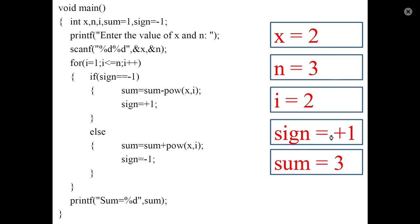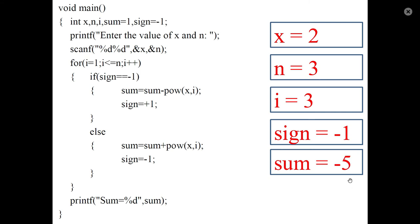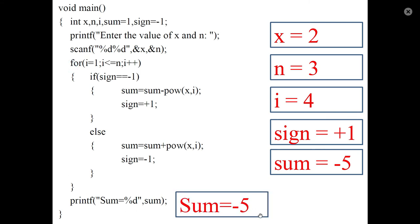Sign is set to minus 1. Next i becomes 3, condition is true. Sign is minus 1, so subtract x raised to i: 2 raised to 3 equals 8 is subtracted. Sum updates to minus 5. Update sign to plus 1. The iteration completes, i increments to 4, and the condition is now false. Exit the for loop and display sum equal to minus 5.